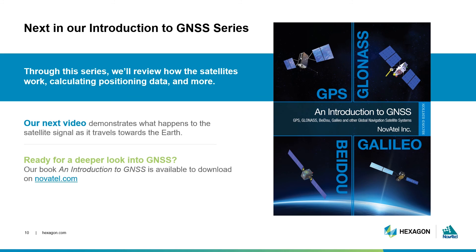Thanks for joining me for Episode 1 of our Introduction to GNSS webinar series. I've introduced you to the underlying equation for determining GNSS positioning, and to the general infrastructure that supports these calculations. Our next video will share what happens to the satellite signal when it leaves the satellite, the factors that contribute to positioning errors, signal degradation, and more. If you're ready to get a head start, you can download our in-depth book, An Introduction to GNSS, on our website. I'll see you in the next video.